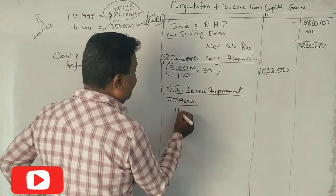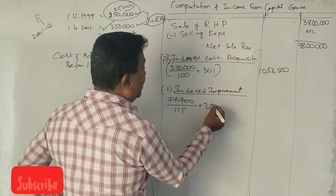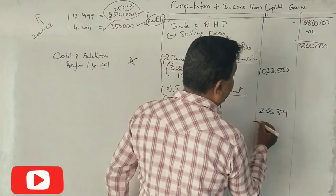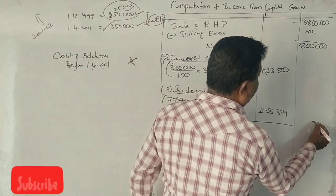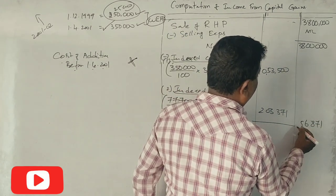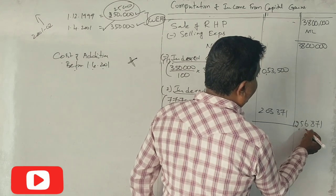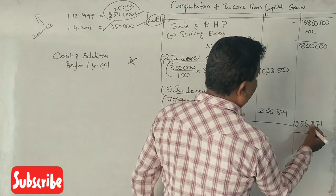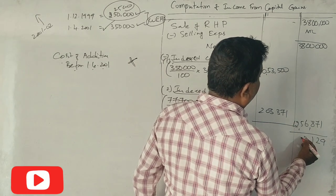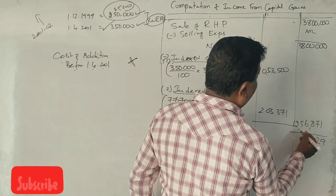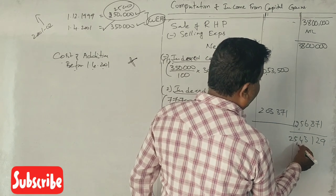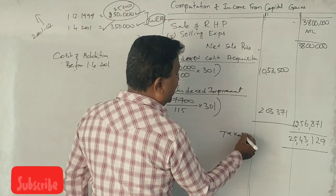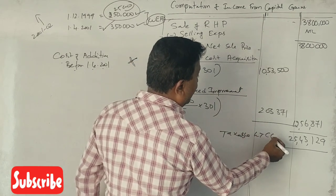Total indexed cost: 12,57,087. Sale proceeds: 38,00,000. Long-term capital gain: 25,43,129. This is the taxable long-term capital gain.